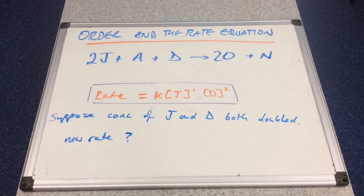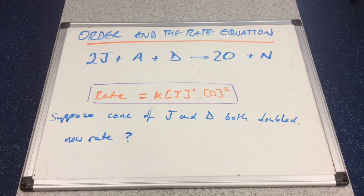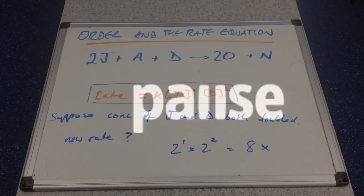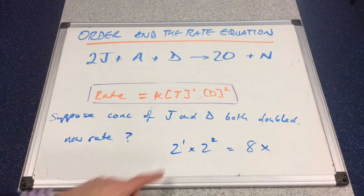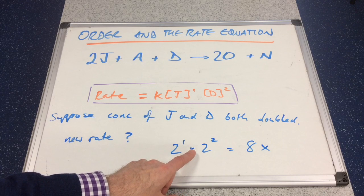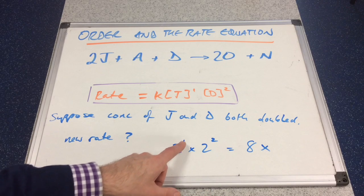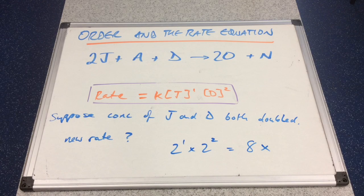Suppose the concentration of J and D were both doubled — what would be the effect on the rate? If you double the concentration of J, you raise that to the power 1 because it's first order, giving 2 to the power 1. Multiplied by the doubling of D raised to the power 2, so 2 to the power 2. That's 2 times 4, which is 8 — an 8-fold increase in the rate.